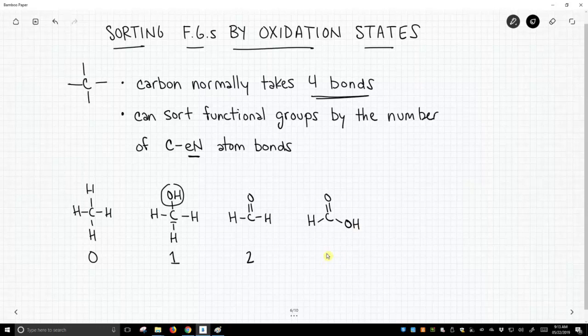This is called formic acid. It's an example of a carboxylic acid functional group that has three bonds. And then another really common molecule is carbon dioxide. This carbon has four bonds to an electronegative atom.